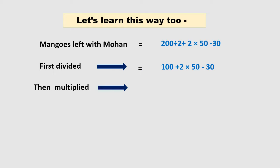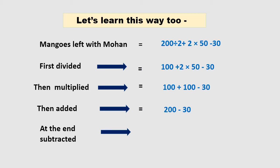Then multiply: 2 times 50 equals 100. So 100 plus 100 minus 30. Then add: 100 plus 100 equals 200 minus 30. At the end, subtract: 200 minus 30. The answer is 170 mangoes.